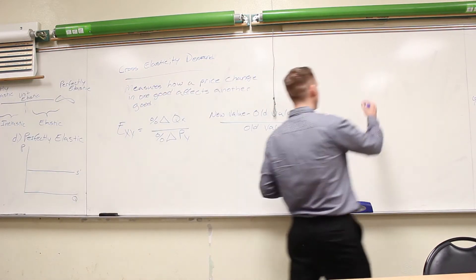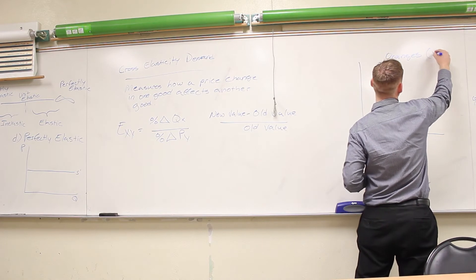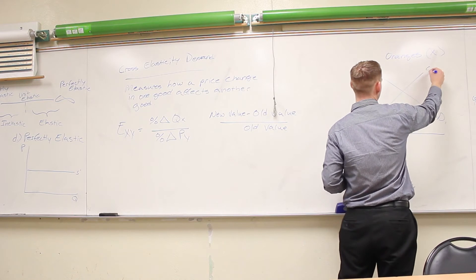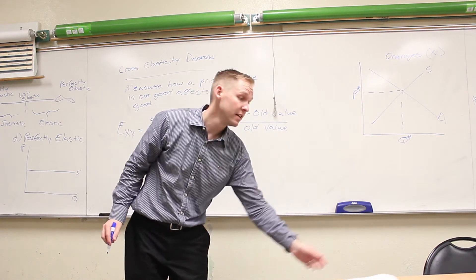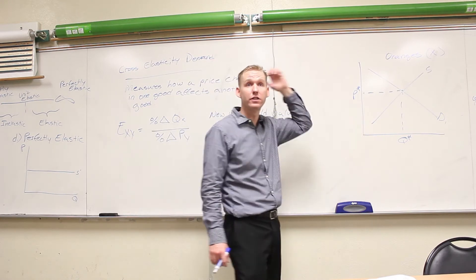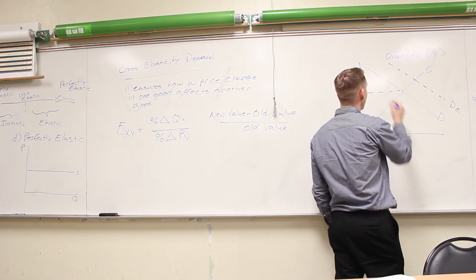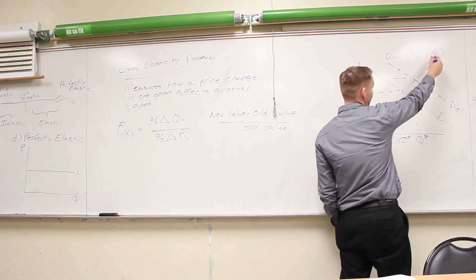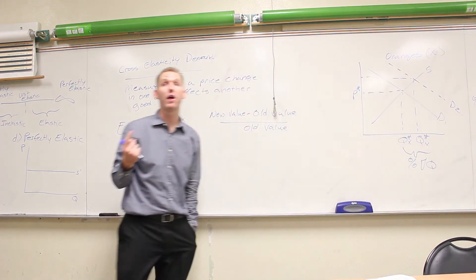Let's say we're looking at the market for oranges — this will be our good X. Here's the demand curve and supply curve, and here's our equilibrium quantity and price. Now let's say the price of bananas goes up because a hurricane damaged a bunch of banana plantations, shifting the supply curve left. How is that going to impact the market for oranges? There's going to be an increase in demand, so this shifts out, the price goes up, and the equilibrium quantity changes. We're concerned about the percentage change in quantity for oranges given a price change in bananas.